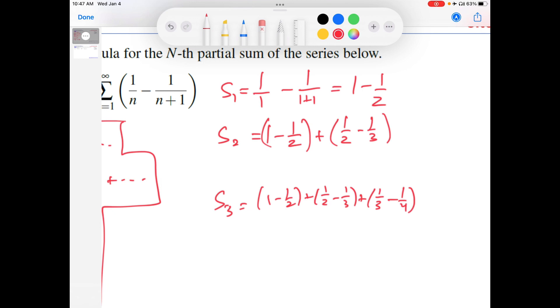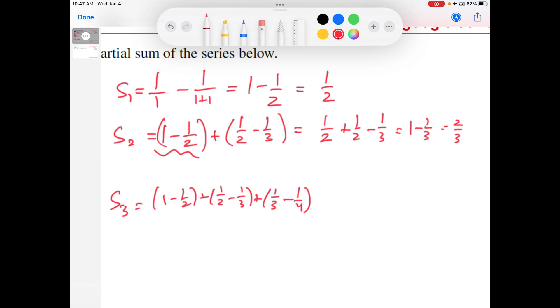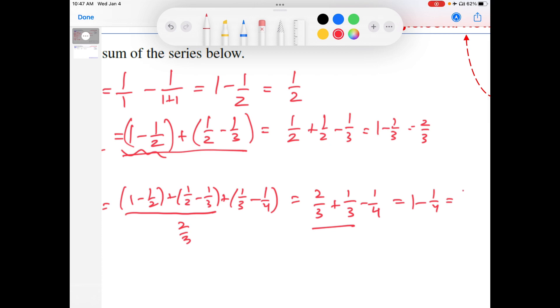Finding a formula for the nth partial sum of this series. Of the SNs that we have so far. How are we going to do this? One thing you might want to do is maybe try to simplify this. So this is 1 half. This one is 1 half plus 1 half minus 1 third, because this is 1 half. So this is 1 minus 1 third, which is 2 thirds. That's S2, so that is 2 thirds. So this is 2 thirds plus 1 third minus 1 fourth. So this gives us 1 minus 1 fourth. So that is 3 fourths.